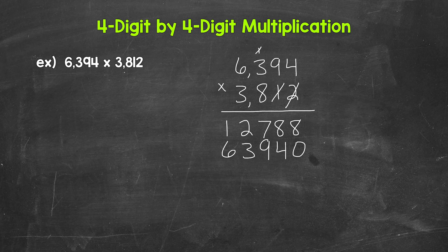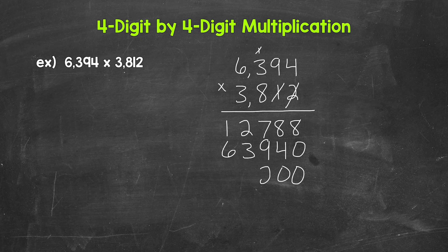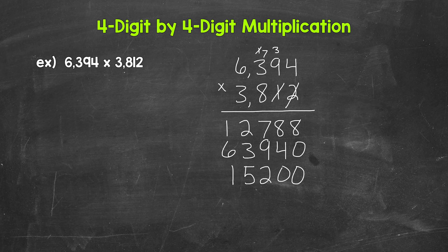Now we are done with this 1, so we move over to the 8 in the hundreds place. That 8 has a value of 800, so we are doing 6,394 times 800. We need 2 zeros here, and then we can multiply. So we have 8 times 4, which is 32 — write the 2, carry the 3. Then 8 times 9 is 72, plus 3 is 75 — write the 5, carry the 7. Then 8 times 3 is 24, plus 7 is 31 — write the 1, carry the 3. And then 8 times 6 is 48, plus 3 is 51. So 6,394 times 800 gives us 5,115,200.